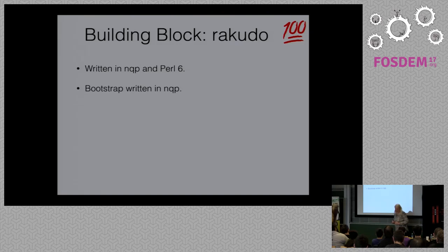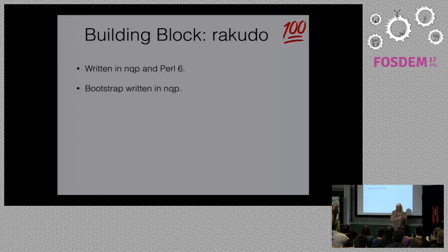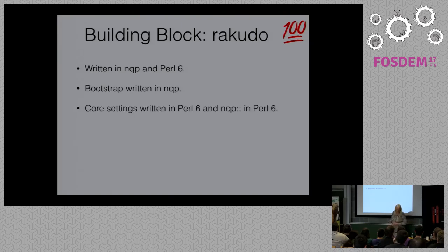The bootstrap is written in NQP. Perl 6 has all these high-level types like bool, attribute, parameter, subroutine, and all that — these need to be created. They need to be bootstrapped before you can actually write the grammar that processes your Perl 6 code, so that part is written in NQP. It's not nice because nothing really exists — it really is a bootstrap, but it works.